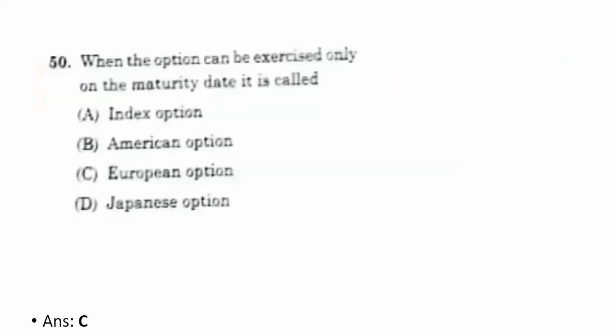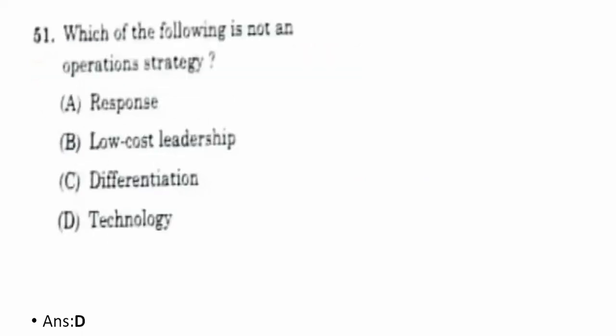Fiftieth question: when options can be exercised only on the maturity date, it is called C — European option. Fifty-first question: which of the following is not an operations strategy? D — technology — is not an operations strategy.